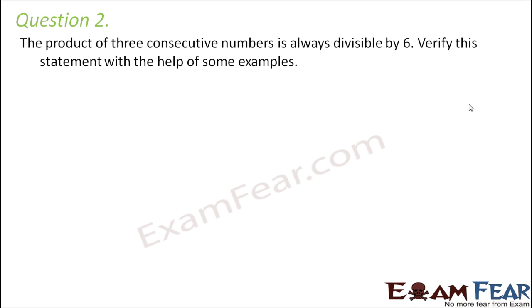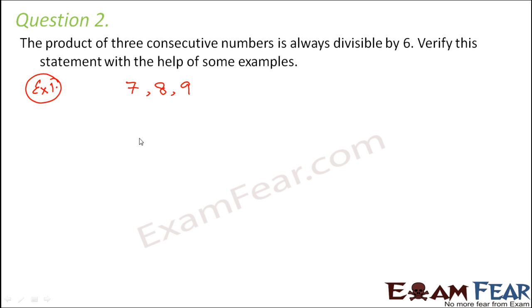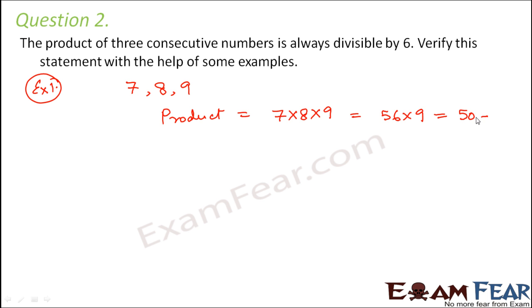Question 2: The product of 3 consecutive numbers is always divisible by 6. Verify the statement with the help of some examples. Let us consider example 1 — take three consecutive numbers: 7, 8 and 9. Their product is 7 × 8 × 9 = 56 × 9 = 504.